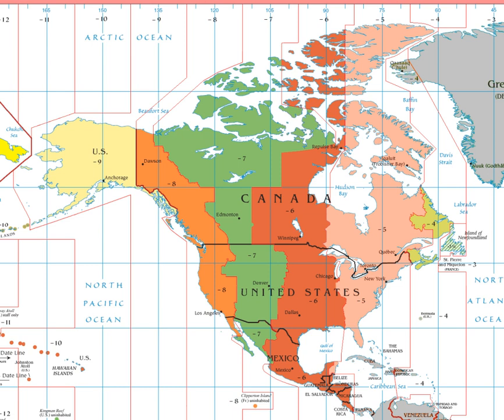The largest city in the Mountain Time zone is Phoenix, Arizona. The Phoenix metropolitan area is the largest metropolitan area in the zone. The next largest metropolitan area that observes Mountain Time is Denver, closely followed by the El Paso–Juarez area.